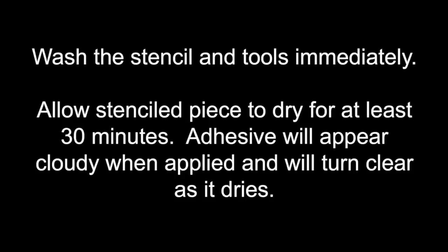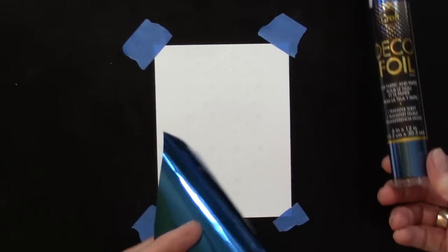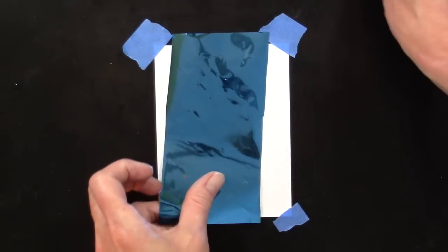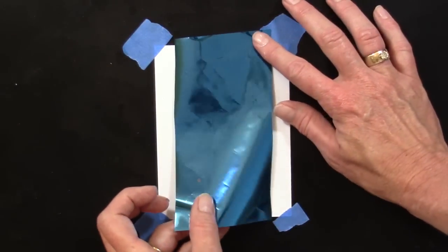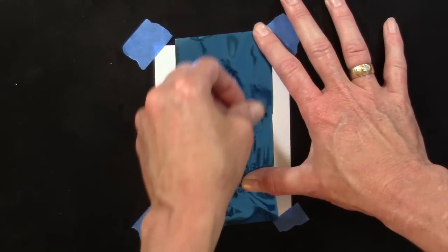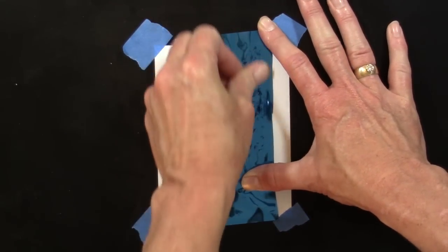Once the work surface is completely dry, you're going to cut a piece of deco foil approximately the size of the stenciled area. Lay the deco foil over the stenciled area with the color side up.